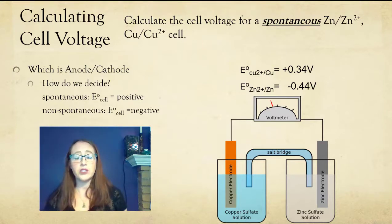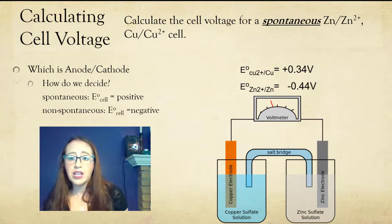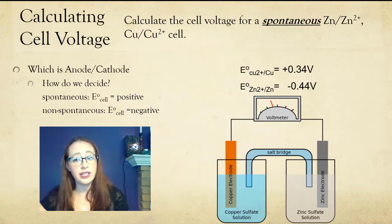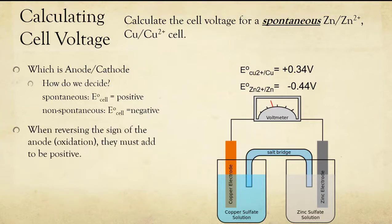The oxidation value is going to either, depending on which way you like to think about it, have a sign change before you add them up, or it's going to be the subtracted value. So by looking at these numbers, we can decide that in order to have a positive value of E, we're going to need to make the zinc the oxidation value. Because when we reverse the sign of the anode, they must add to be positive. So if we reverse the sign of this, 0.44 plus 0.34 is going to be a positive value. If we reverse this sign, if we reverse the sign of the copper, then we wouldn't get a positive value. And so our copper in this situation must be our cathode, and our zinc must be our anode.